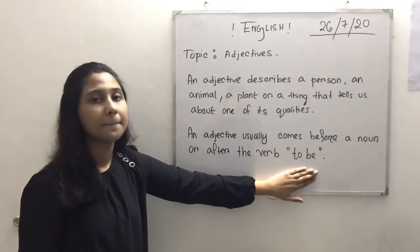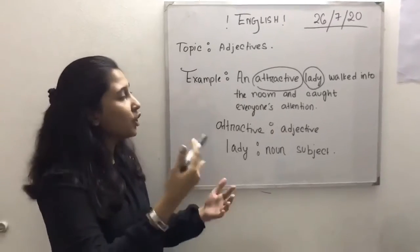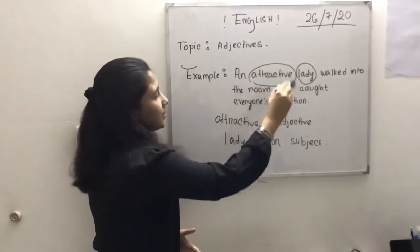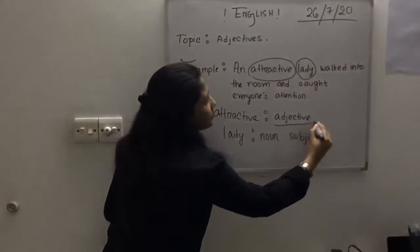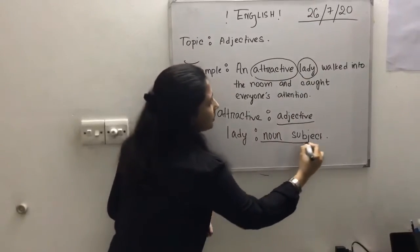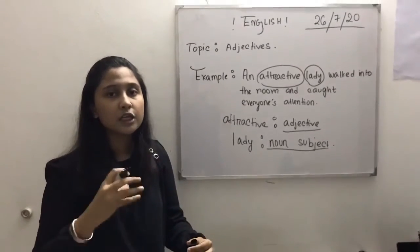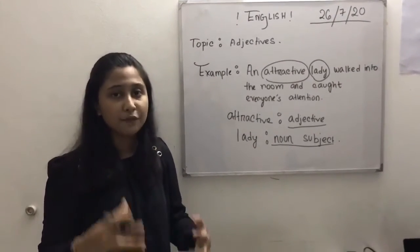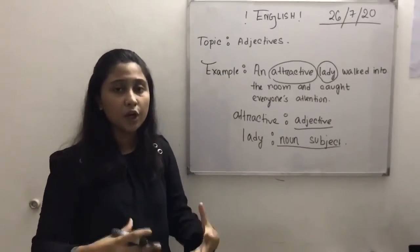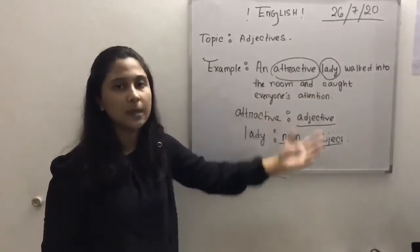For example: 'An attractive lady walked into the room and caught everyone's attention.' In this sentence, the word 'attractive' is the adjective and the word 'lady' is the noun subject. As mentioned, an adjective usually sits before a noun subject or after the verb 'to be' — in this case the adjective is before the noun subject.